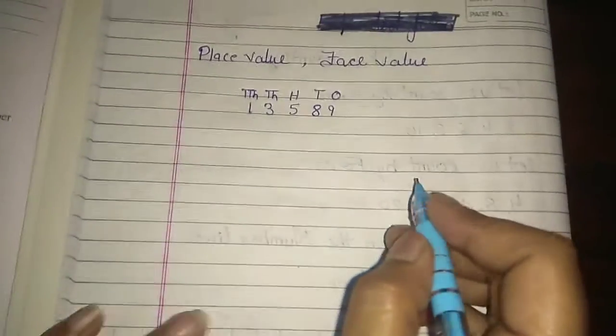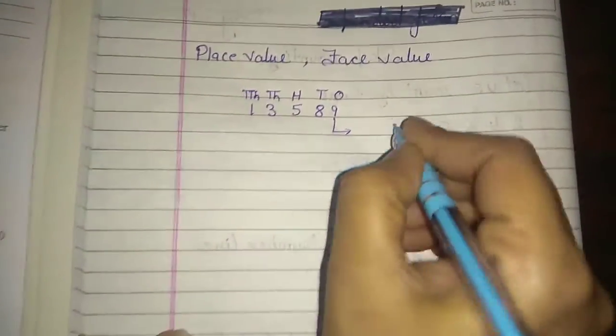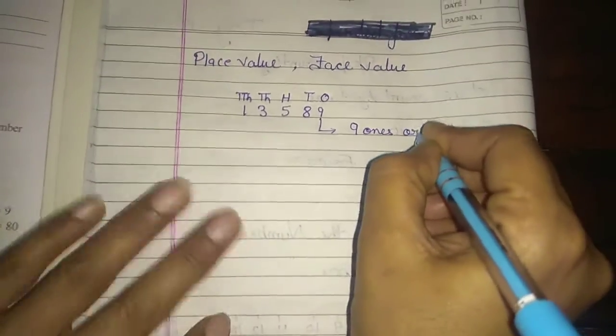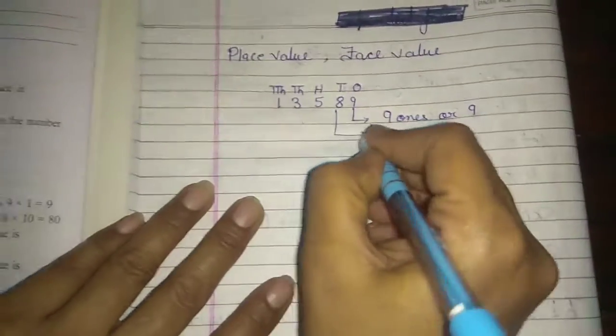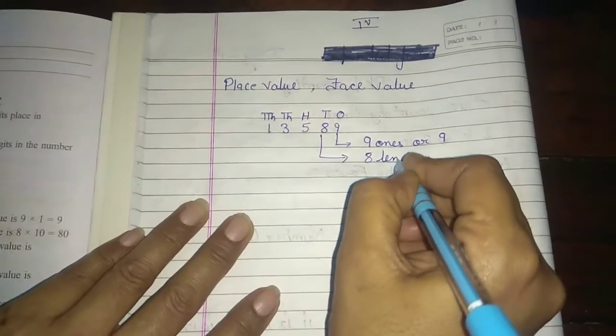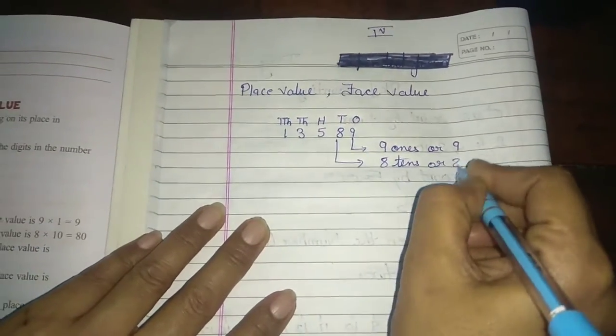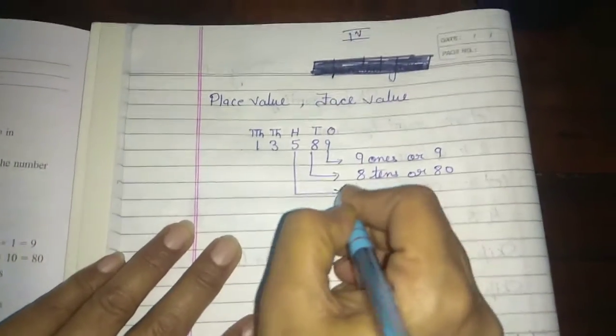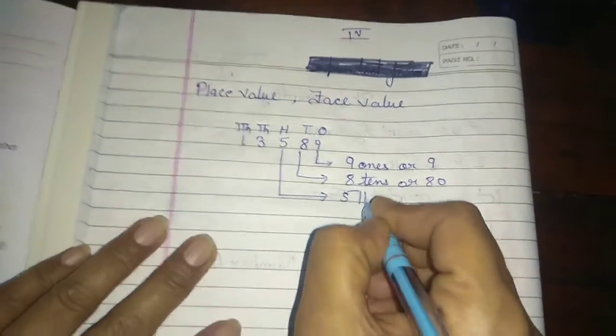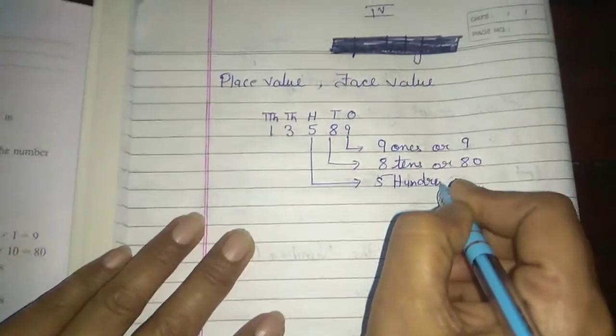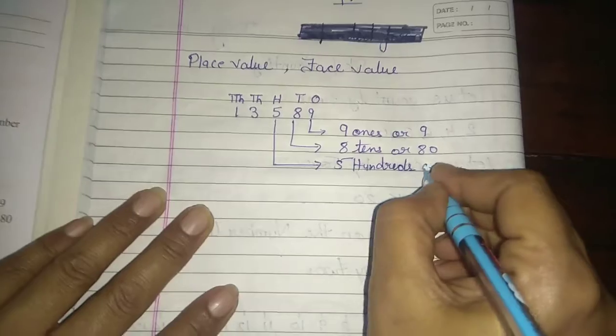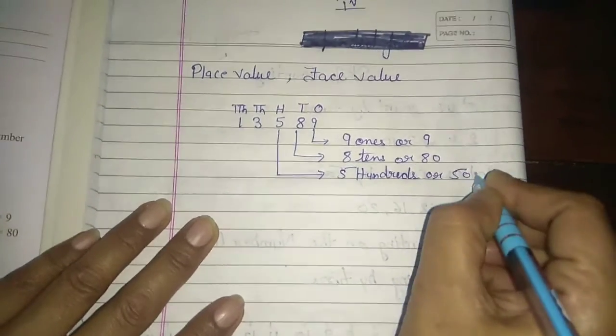Write down the place value of nine. So nine's place value is nine times one, or nine. Eight is eight times ten, which is eighty. Five is five times hundred, which is five hundred.